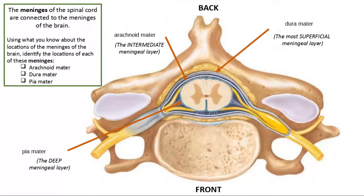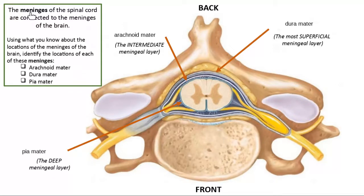The pia mater is closest to and attached to the spinal cord — and the brain as well. The dura mater is the thickest outermost layer outside the spinal cord and outside the brain. The arachnoid mater is in the middle. The subarachnoid space underneath the arachnoid mater is where cerebrospinal fluid is found, and that's what's collected during a spinal tap from this intermediate meningeal layer.